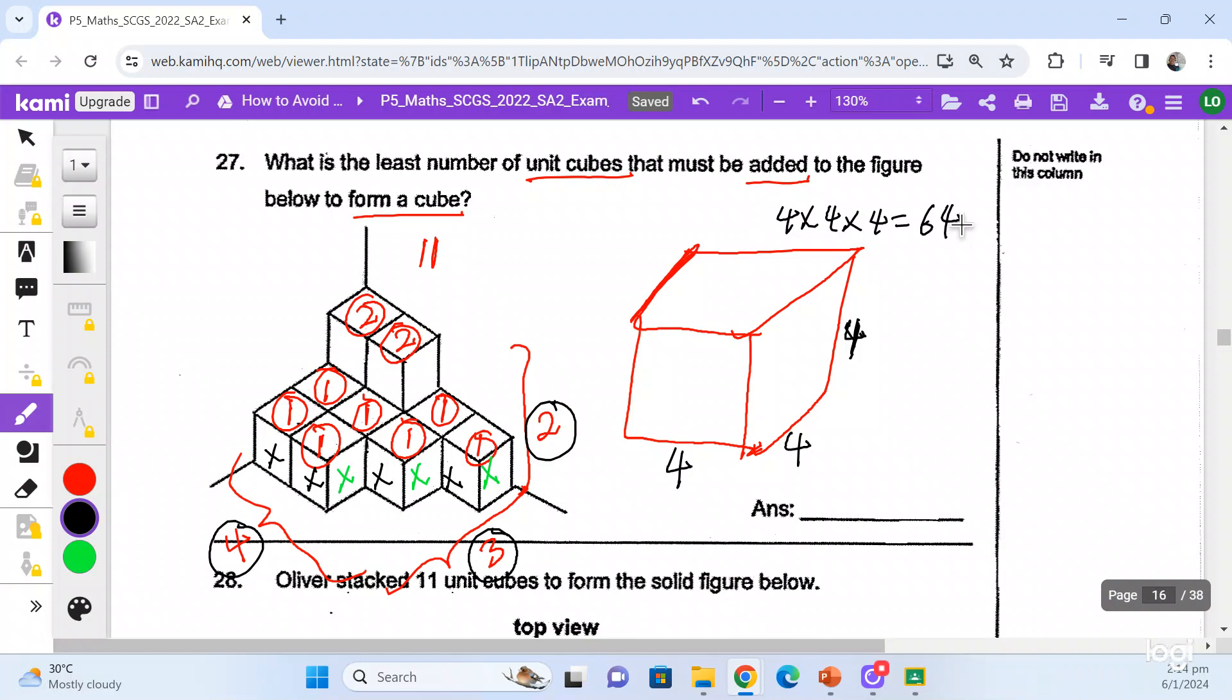And then what do I do next? So I have 11 small cubes that make up the solid figure, which is not enough. So I need to add some more to make into a giant cube.